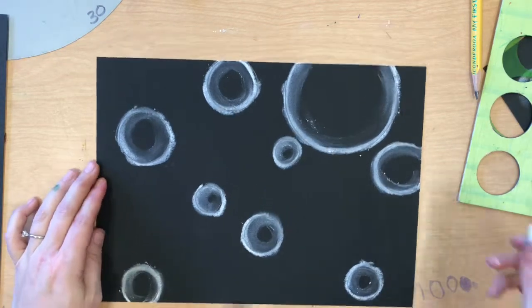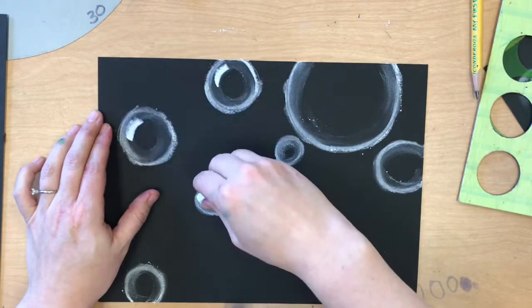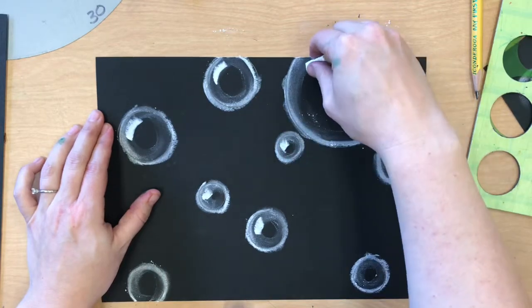After that, you're going to do a little white shine. It's a curved line that looks like a light is shining on your bubbles.